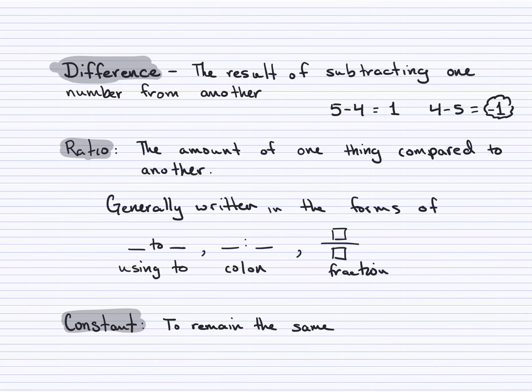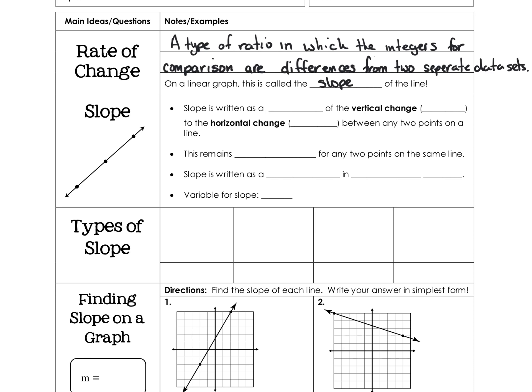Constant means something that remains the same — no matter what you do, you always get the same result. To be constant means to continually get the same result. Using those definitions, a rate of change is a type of ratio in which the values being compared are differences from two separate data sets.